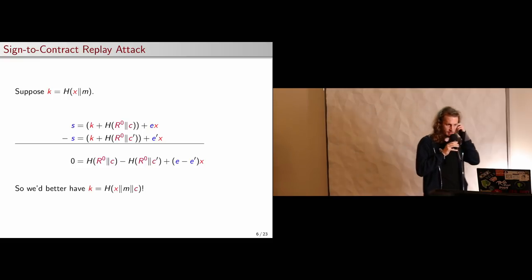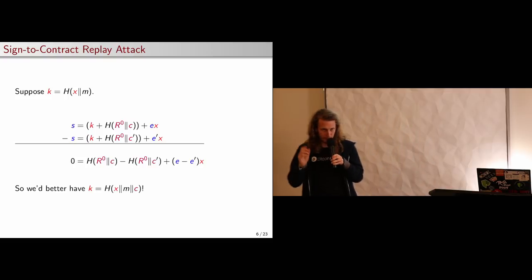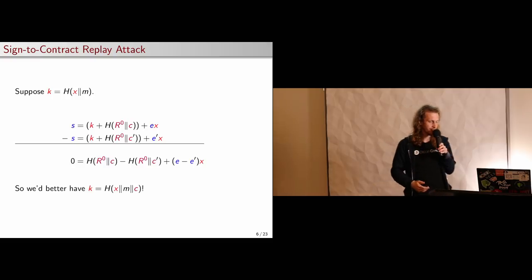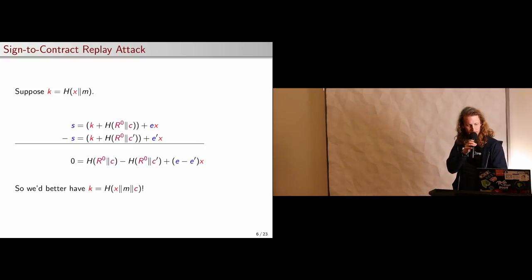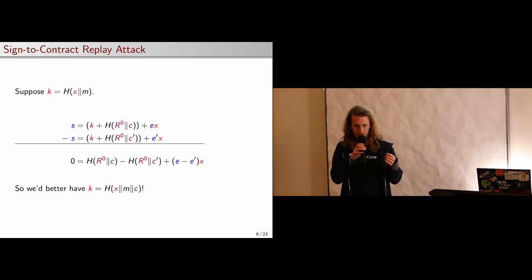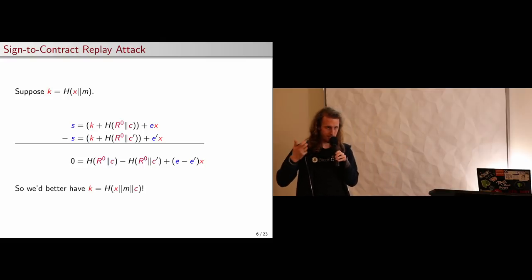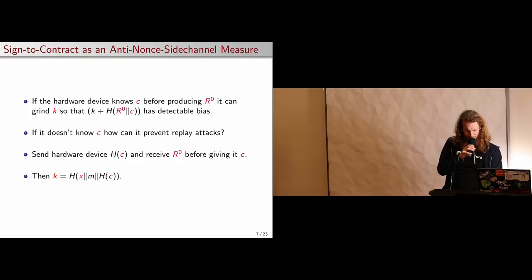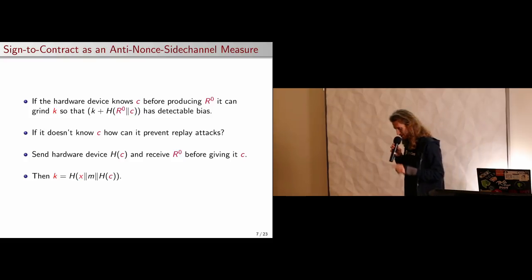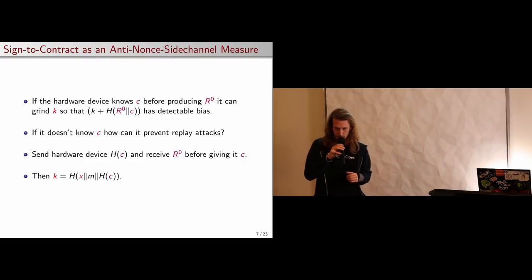There's always a simple fix. The simple fix in this case is that when the hardware wallet is generating its nonce, it should not only hash the secret key and the message — it should also hash the commitment. So you give it this commitment, and now it can use that to make sure it generates a unique nonce even if you change the commitment on it. Now if you change the message or the commitment, it will use a different k value, and the two k values won't cancel out. Now let me talk about a cool application of sign-to-contract related to preventing nonce side-channel attacks.